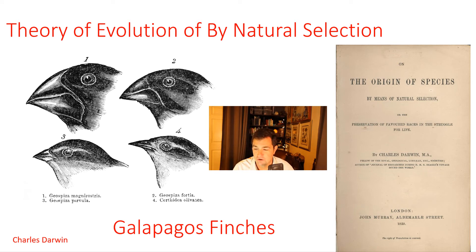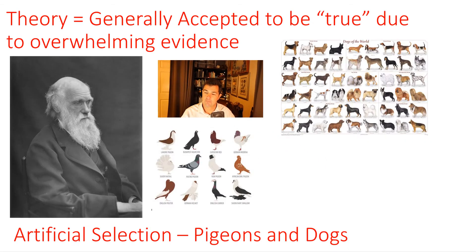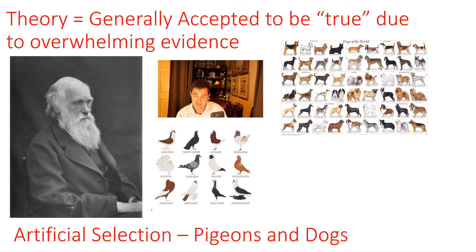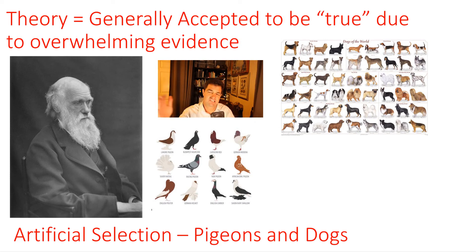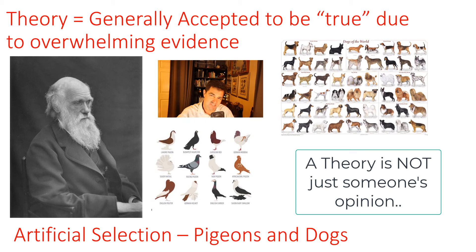Those are accurate points, but I want to highlight a couple of things. First, the word 'theory' in biology — when we use it, it refers to something generally accepted to be true due to overwhelming evidence, meaning a bunch of studies have all led to the same conclusion. In biology, a theory is sort of the highest level of accepted knowledge.